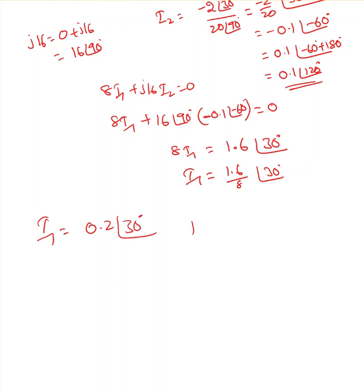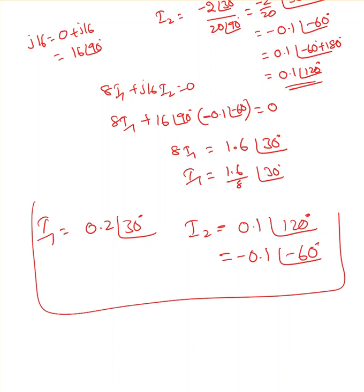So our final answers are: I1 equals 0.2∠30° and I2 equals 0.1∠120°, or equivalently minus 0.1∠−60°. Thank you.